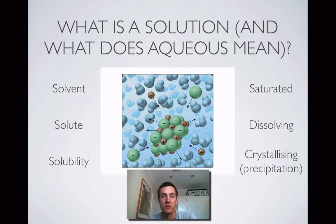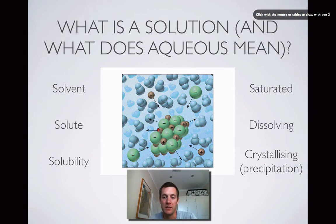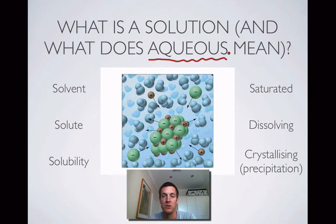What is a solution? Well, a solution is formed when a solute dissolves in a solvent. In this particular example we can see a diagram of: here's our solute — it's some ionic solid, we can see the charges on it, and it's actually dissolved in water. So the solvent is water, and the solute is the solid dissolving in the water. This is called an aqueous solution because the solvent is water. Water's not the only solvent — there are lots of other liquids we can use as solvents, and they just don't make aqueous solutions.